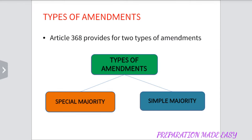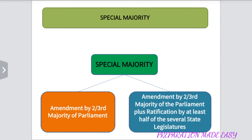Now let us see types of amendments. Article 368 provides for two types of amendments: through special majority and through simple majority. Special majority can be seen in two types — amendment by two-third majority of the Parliament, and amendment by two-third majority of the Parliament plus ratification of half of the States.